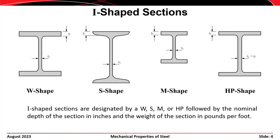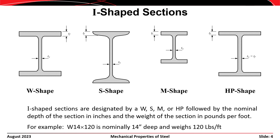Rolled I-shape sections come in four different variants designated as W, S, M, or HP. W stands for wide flange shape, S for standard shape, M for miscellaneous, and HP for H-shaped pile. The letters are followed by two numbers: the first is the nominal depth in inches and the second is the weight in pounds per foot. For example, a W14 by 120 is a wide flange shape nominally 14 inches deep and weighing 120 pounds per foot, though the actual depth is 14.5 inches.